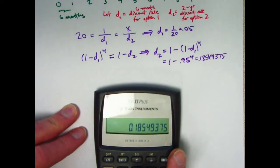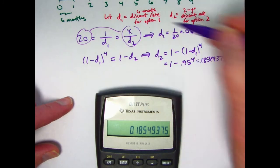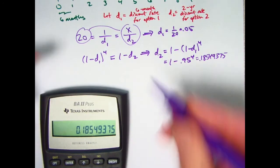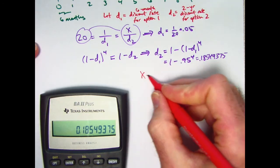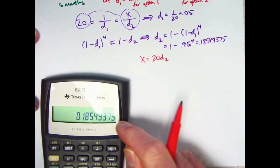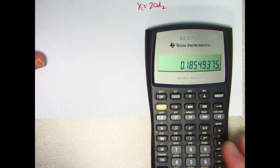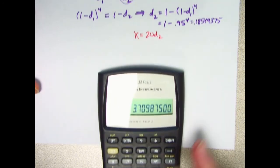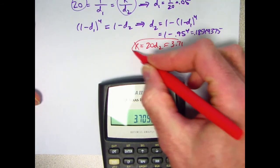What do I have to do to finish the problem? Just use the equality of these two things to solve for x. x is going to be 20 times d2. x is 20d2, so all I need to do is multiply this number that I just found by 20 and that will be the answer. Times 20 is about 3.71. x is approximately 3.71, and that does finish the problem.